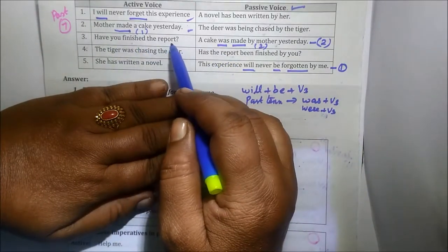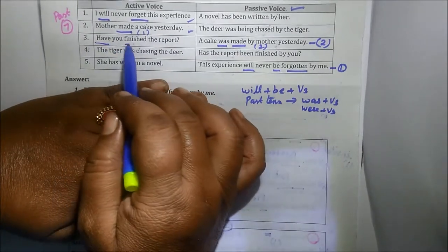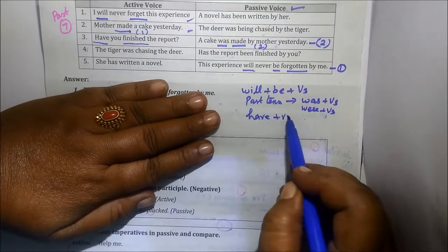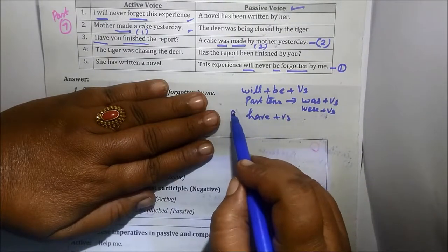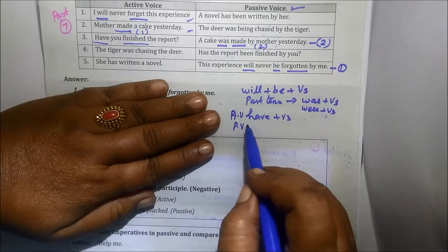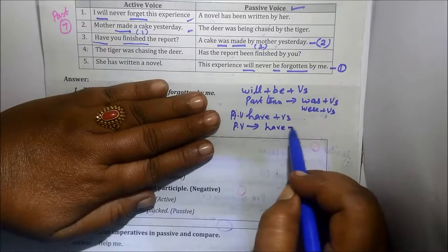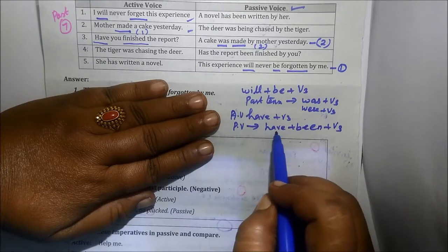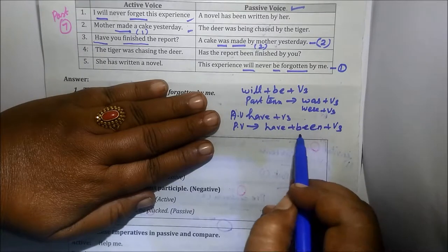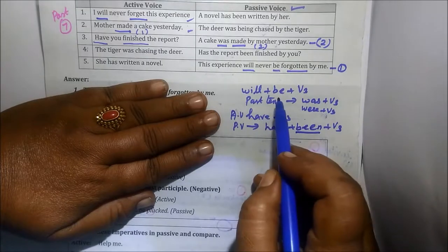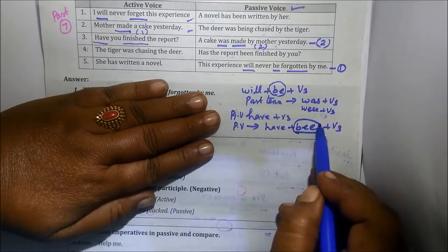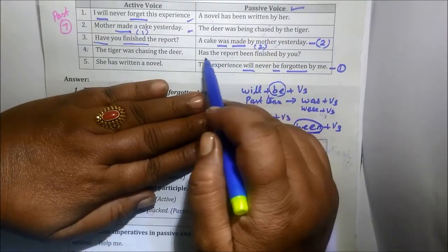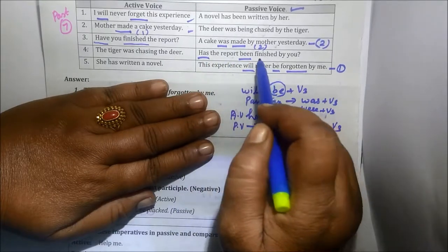Now the third example: 'Have you finished the report?' The verb is 'have finished.' For present perfect passive voice, the formula is: have + been + third form. The third form of 'finish' is 'finished.' So the passive voice is: 'Has the report been finished?'